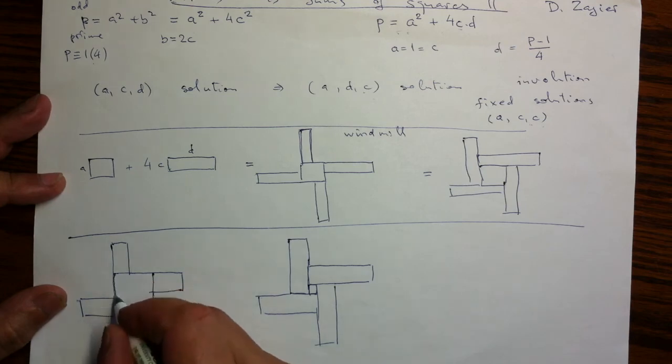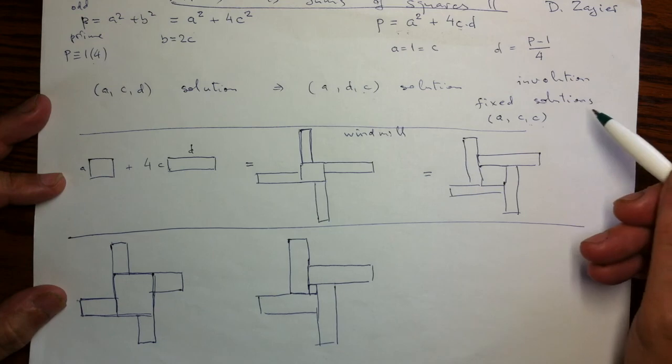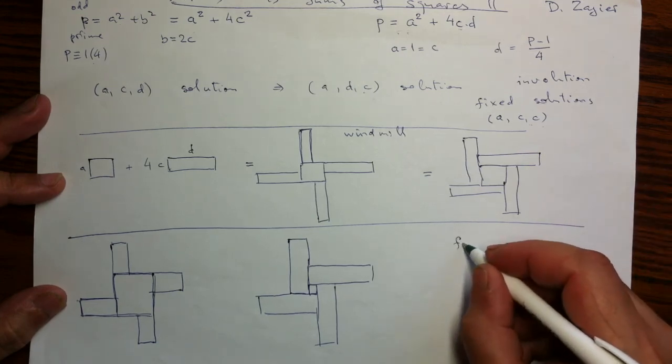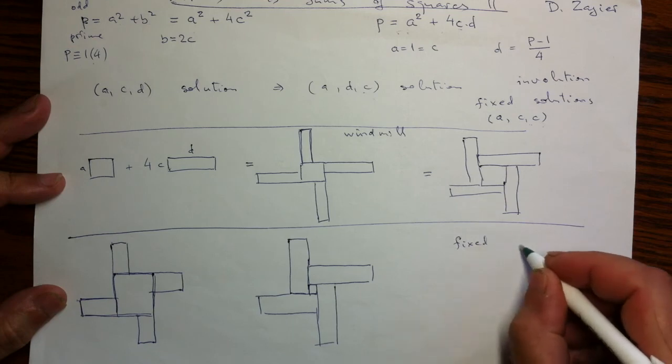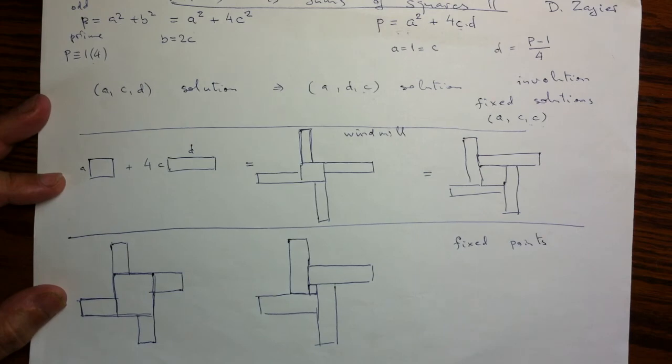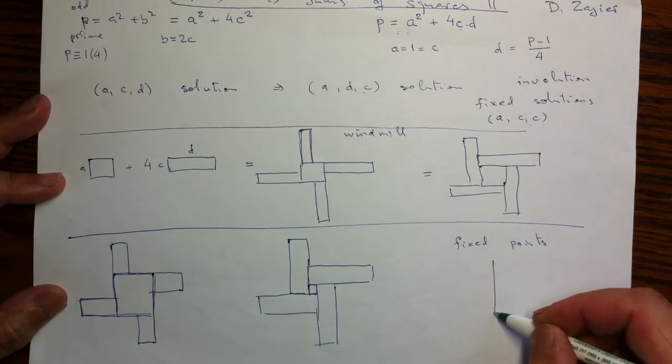Solutions are moved into each other if and only if they have the same overall shape. So let's look at what are fixed solutions under this involution. What are fixed points?